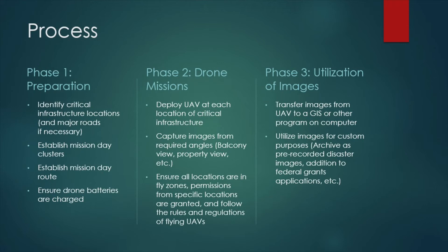After all images are captured, they can then be transferred from the drone to another device. During Phase 3, the images captured from the UAV will be transferred to GIS or another computer program, which will allow communities to utilize the images for several uses as discussed earlier — for example, being archived for further uses or used as an addition to federal grant applications.